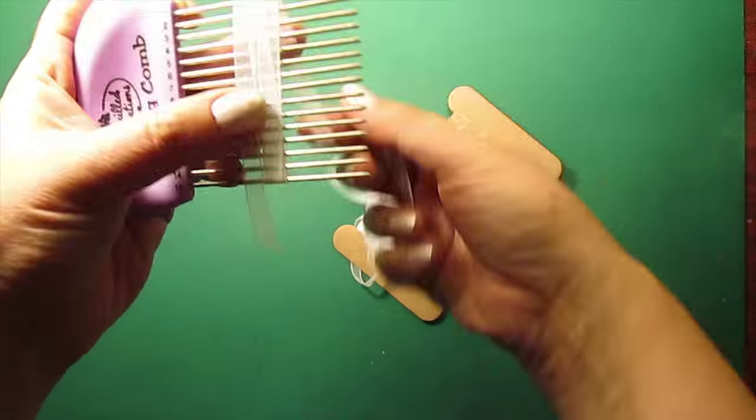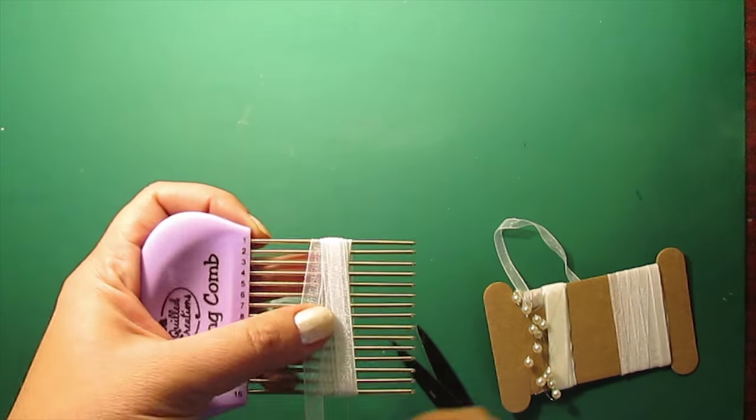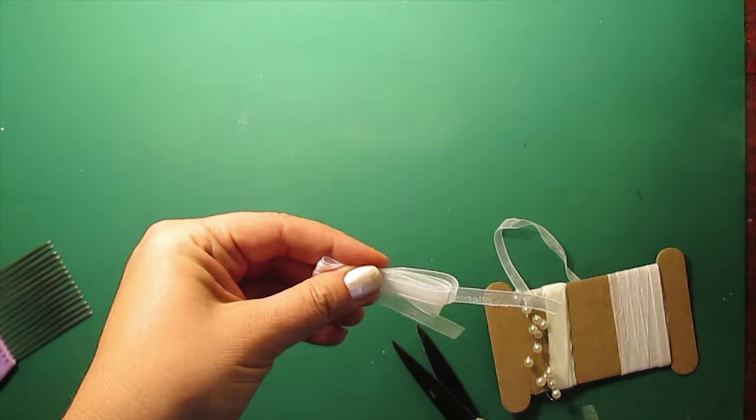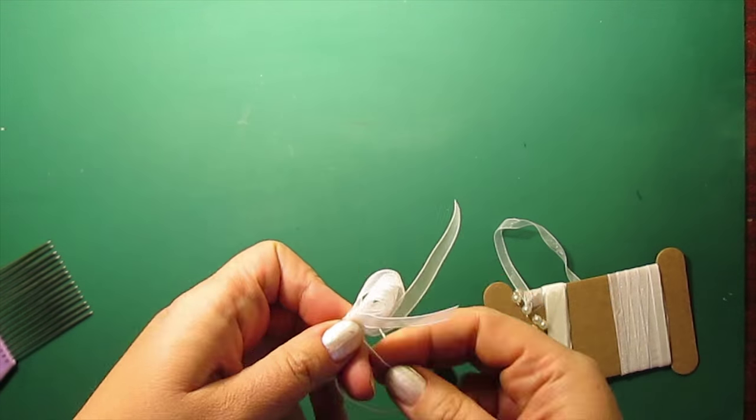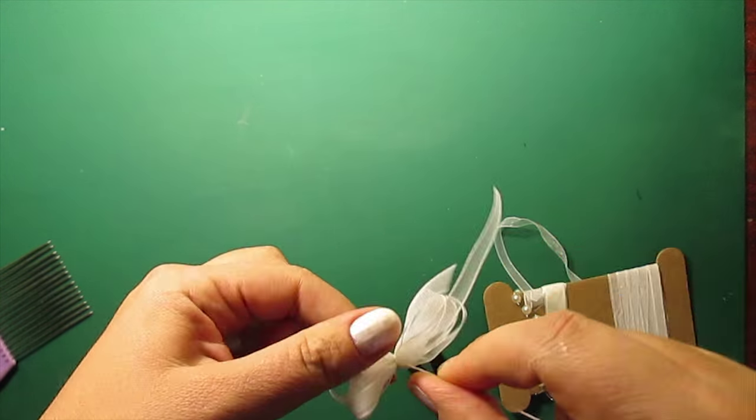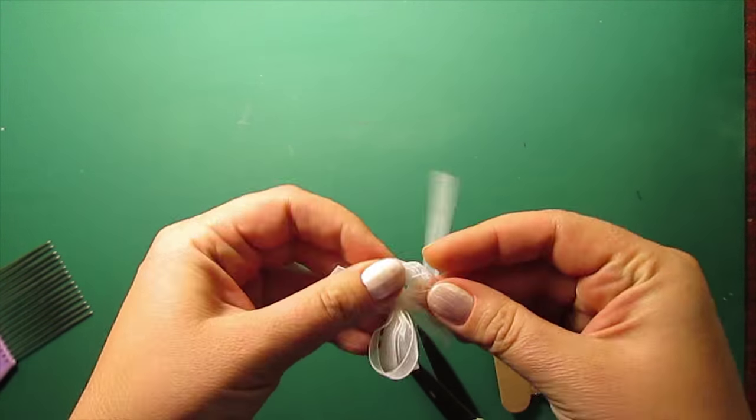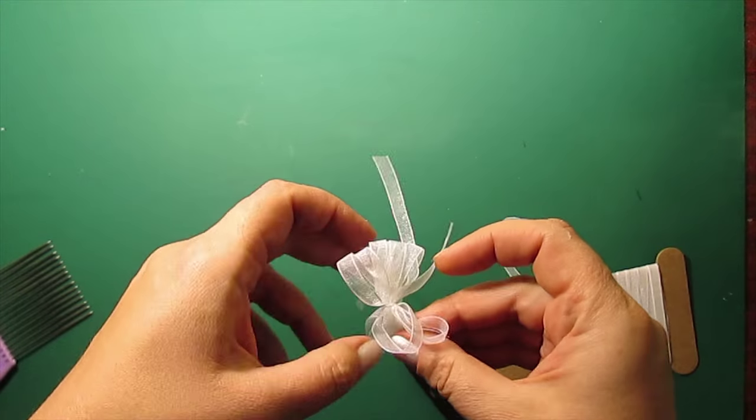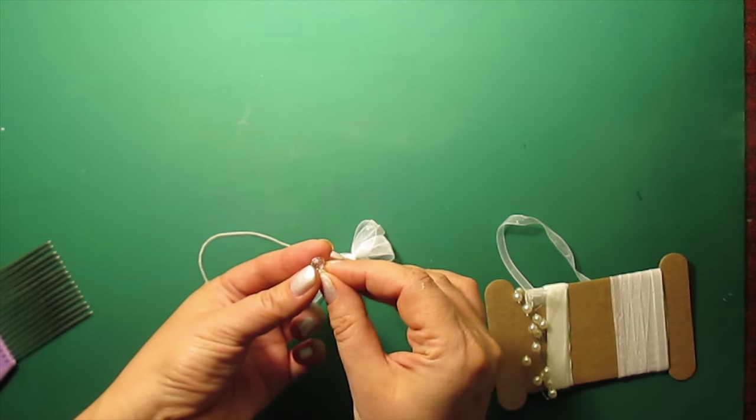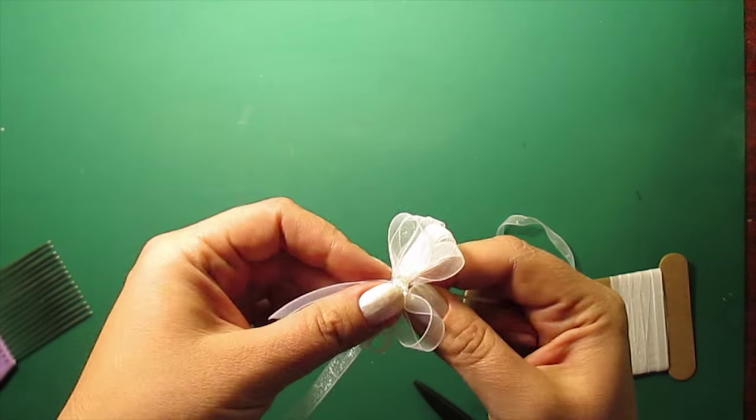To make a bow, I'm wrapping a ribbon around the quilling comb and tying it with a piece of twine. Now I'm also going to add a glass bead to decorate a bow.